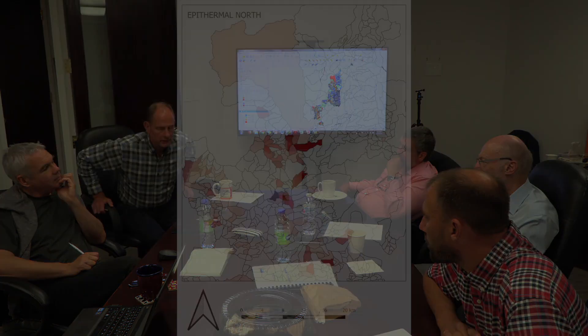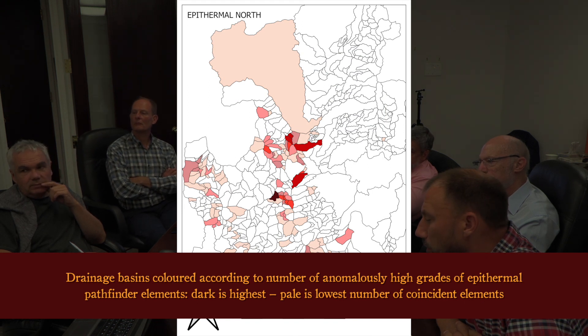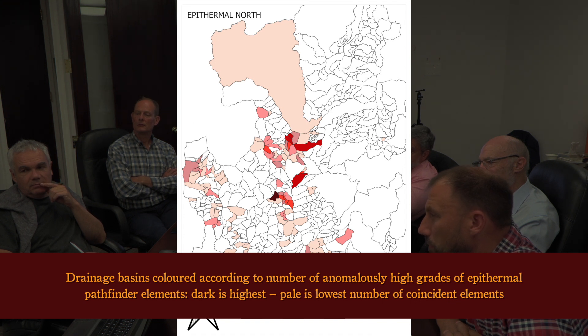I would go another step. We know that typically in an epithermal package you'll get arsenic, antimony, mercury, thallium, selenium, and silver all hanging together. And we have all those in the data set. So why don't we stack them? So if we took the threshold category — the reds — where it's red in this element, and that element, and that element, and that element, it gets a certain likelihood.